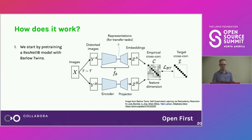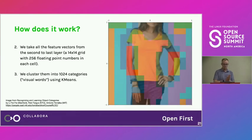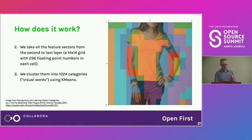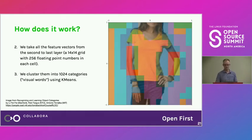The approach is completely unsupervised — no labels needed, applicable to any photos. We take feature vectors from the second-to-last layer, which for 224×224 images gives a 14×14 grid of 256 floating-point-number vectors. Then we do K-means clustering, asking it to make only 1,024 classes, compressing each long feature vector to a single cluster number.